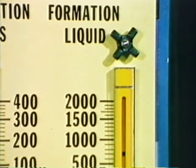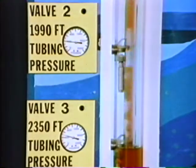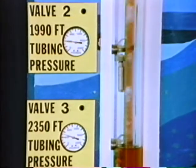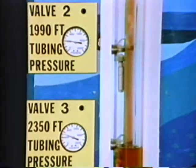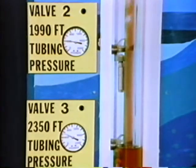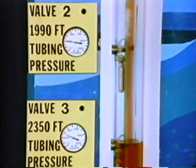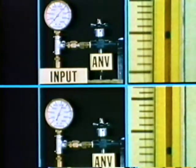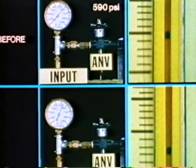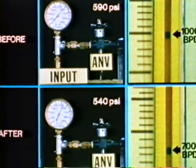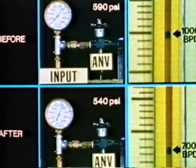With this reduced gas-to-liquid ratio, the flowing pressure gradient has increased. As a result, the pressure in the tubing opposite the number three gas lift valve at 2,350 feet exceeds the input gas pressure of 540 PSI. So gas cannot flow from the casing to the tubing at this valve. Gas is now being injected at the next valve up the hole at 1,990 feet. Thus, only a 50 PSI drop in input gas pressure has caused a severe loss of production. This loss can occur even if the pressure loss is of only short duration, as little as 15 minutes.